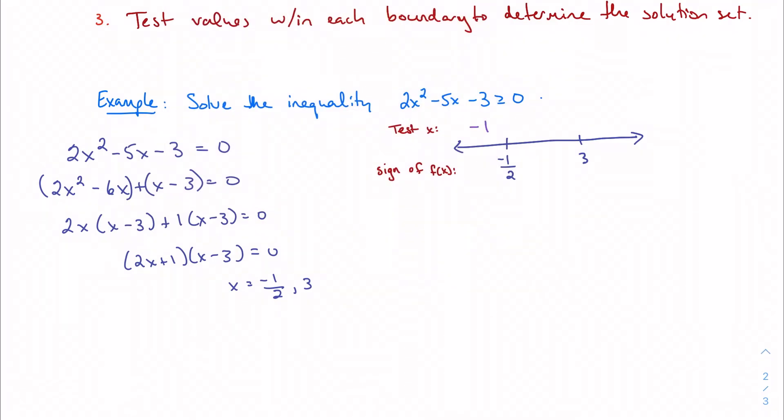We'll pick something between negative one-half and three. When in doubt, always pick zero - make it easy on yourself. Then I want something bigger than three. Honestly, I like to pick powers of ten because the calculations are pretty easy and you can do them quick in your head.